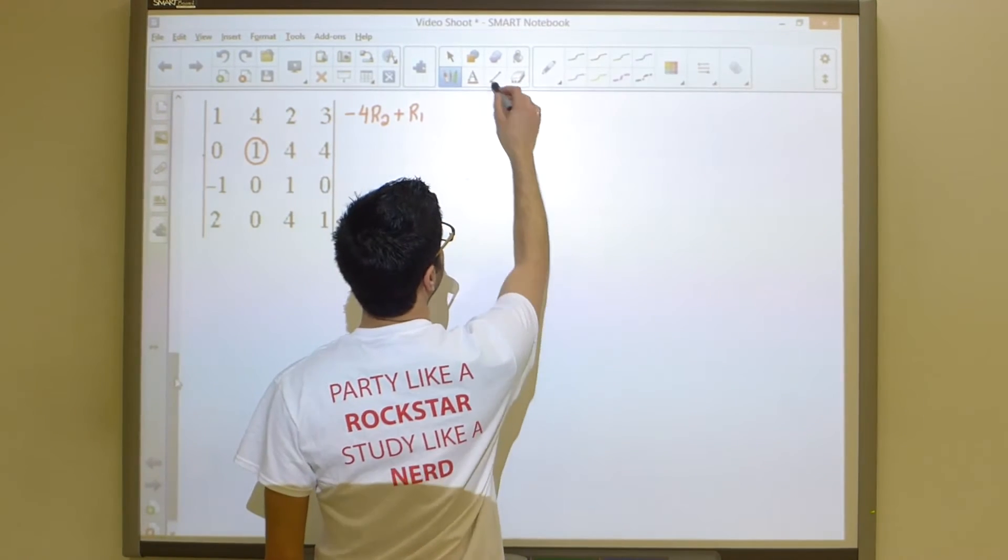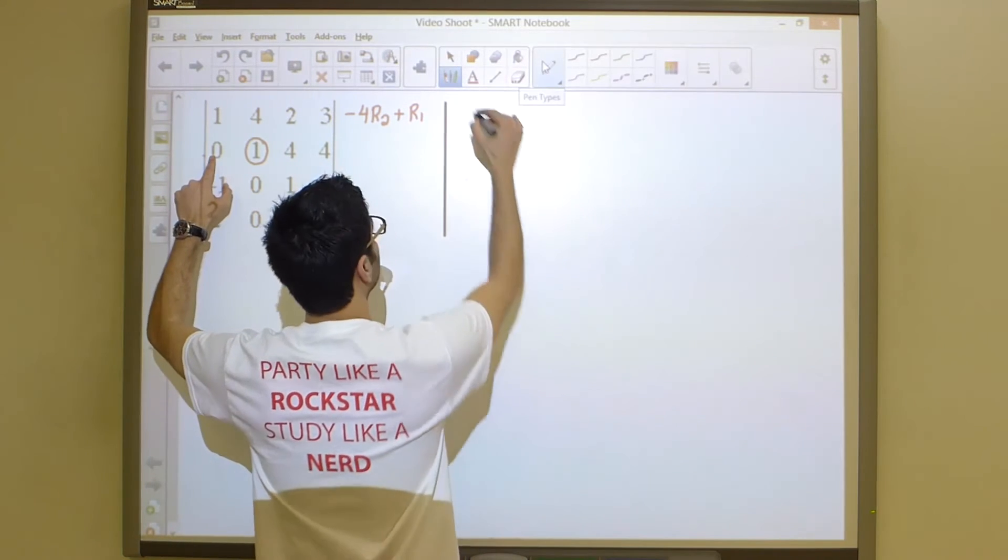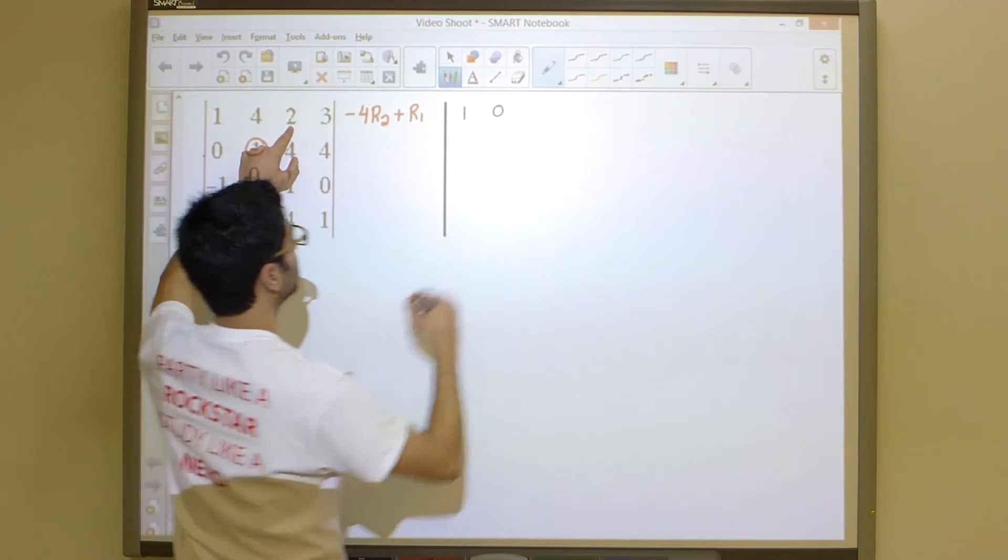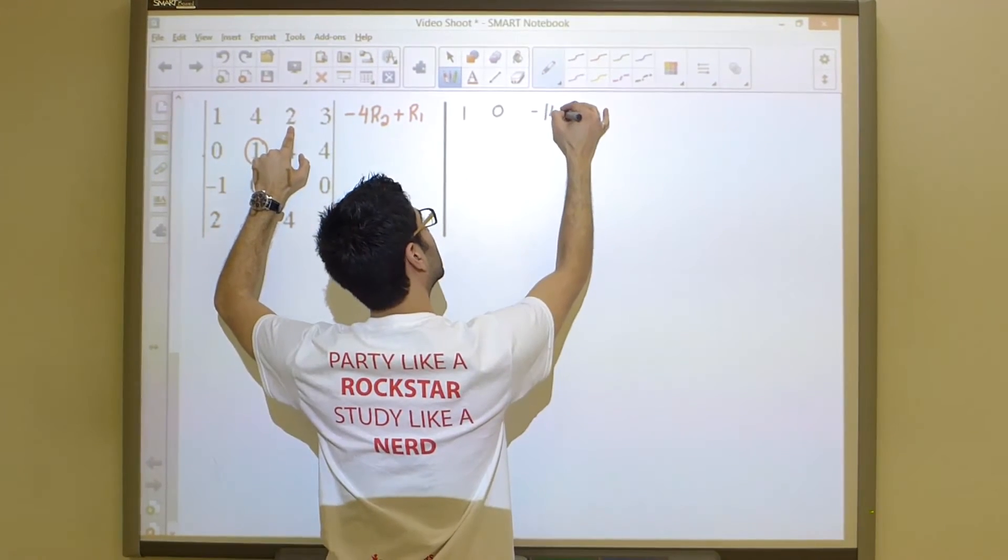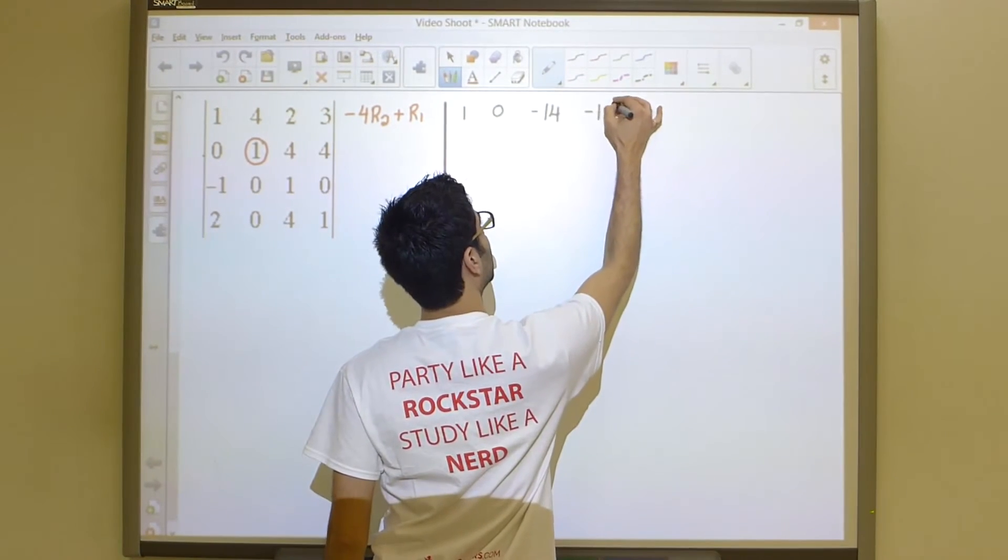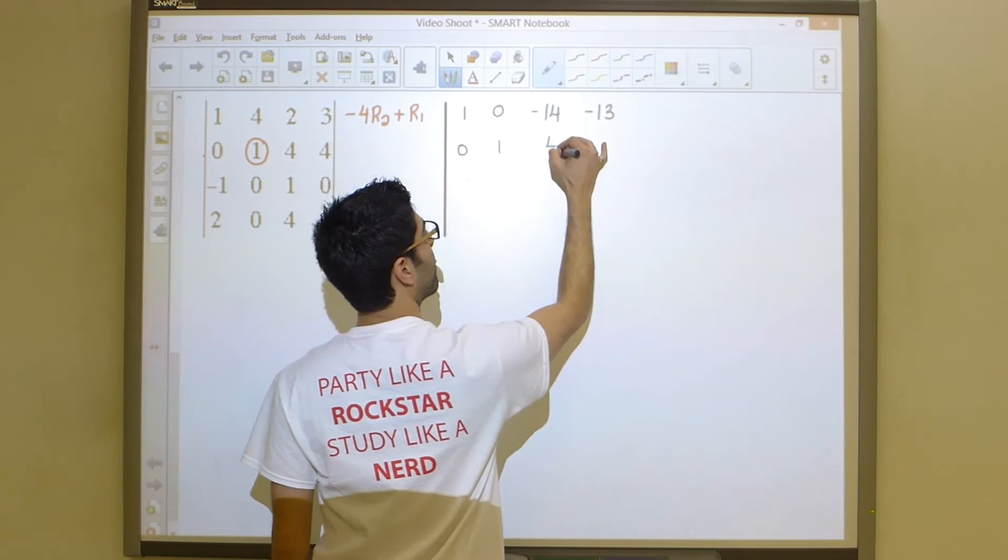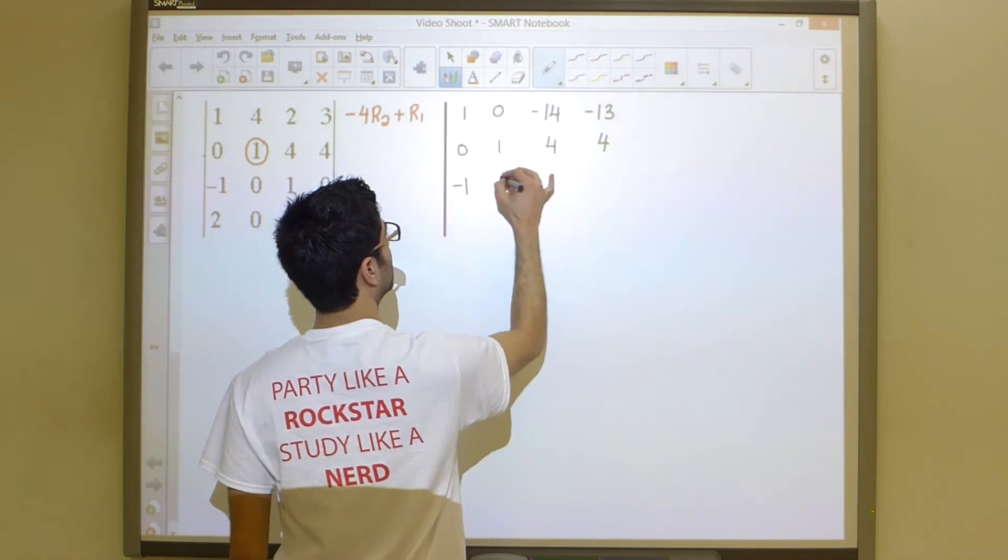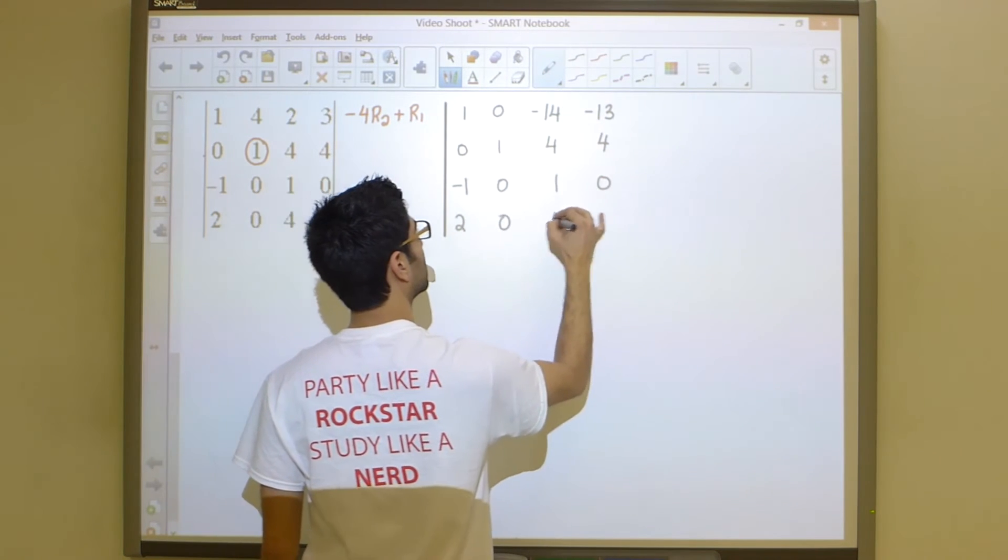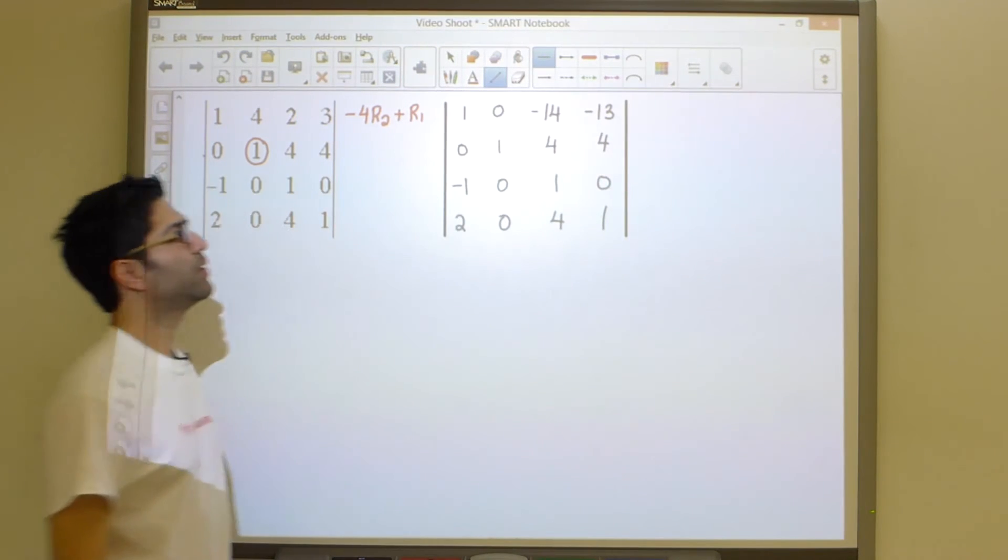So our new determinant, guys, is going to become 1, 0, negative 4 times 4 is negative 16 plus 2 is negative 14. Negative 4 times 4 is negative 16 plus 3 is negative 13. And all the other rows are going to remain intact, guys. And so this is what we're left with.